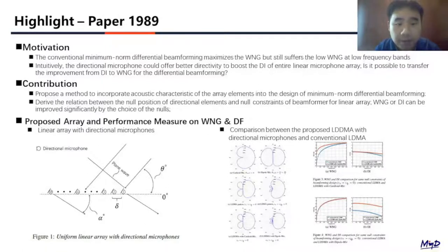The conventional minimum norm differential beamforming maximizes the WNG but still suffers from low WNG at low frequency bands. The WNG at low frequency bands is not good for practical implementation because this problem will amplify the white noise at low frequency bands. So this is not good for speech. The low frequency bands are very important for speech recognition or speech capture.